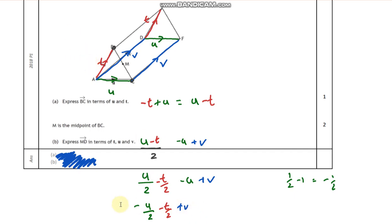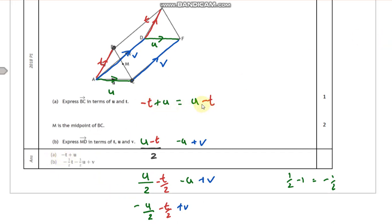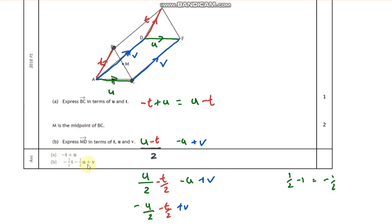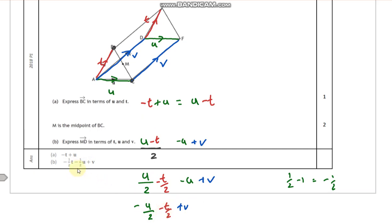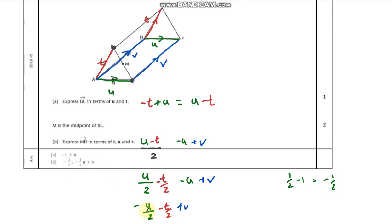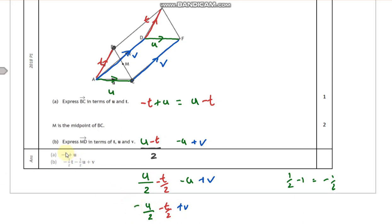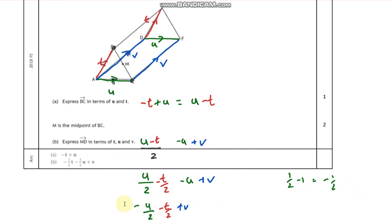To make it look nice I could stick v in the front. Let's double check our answer. BC is negative t plus u — fair enough. For MD we've got negative a half t, negative a half u, and plus v. Notice that they put the fraction up front; I've written it slightly differently but that is absolutely okay. It would look nicer with v in the front. You could also take a half out of the whole expression if you liked. The key point is: label up your diagram and take your time — these are really nice questions to get.